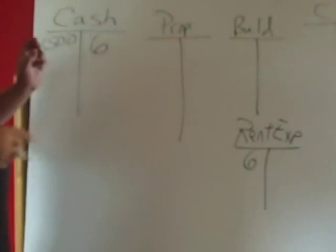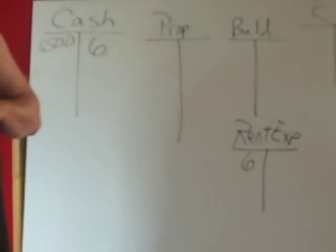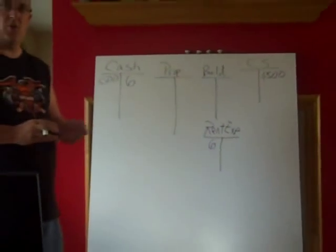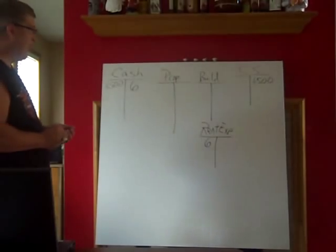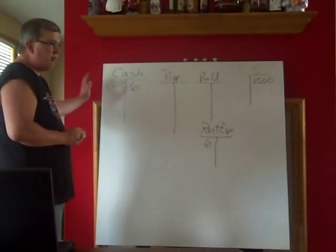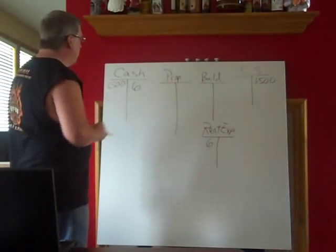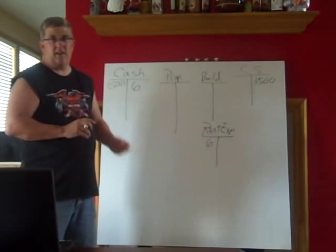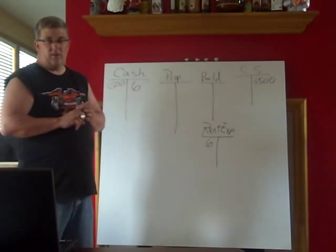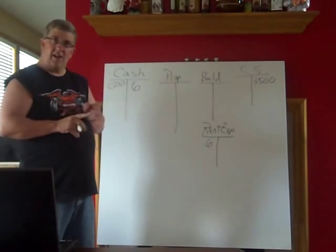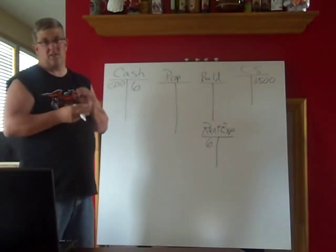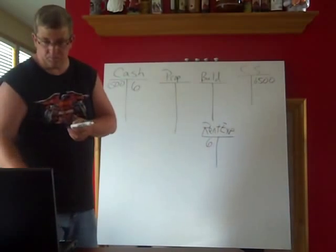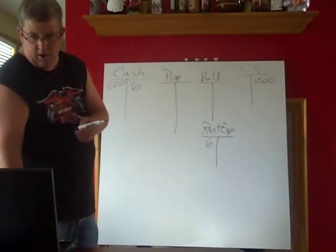We're going to put that on the right-hand side. When we do debits and credits, debits are on the left-hand side facing the account, and credits are on the right-hand side. That's going to be true for all different types of accounts: assets, liabilities, common stock, expenses, and revenues.